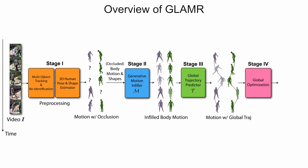Finally, we propose a global optimization framework that jointly refines the global trajectory of each person and optimizes the camera parameters to match the video evidence such as 2D keypoints. The global optimization ensures that the spatial relationship of people in the video is accurate.